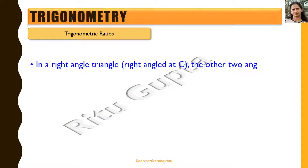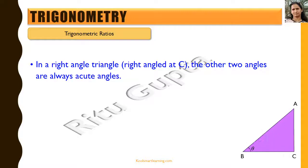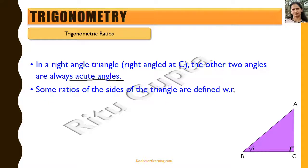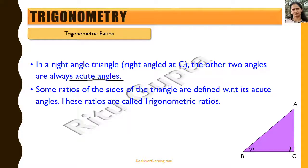In a right-angled triangle — say we have this triangle which is right-angled at C — the other two angles are always acute angles. This is because the sum of the three angles of a triangle is 180 degrees, so if one angle is 90 degrees the other two have to be acute. Some ratios of the sides of the triangle are defined with respect to its acute angle, so we are naming this angle B as theta, which is an acute angle.